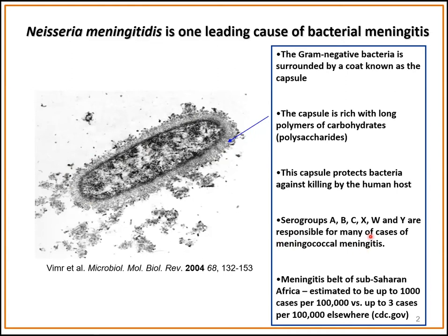There are six disease-causing serogroups: A, B, C, X, W, and Y. These are responsible for many cases of meningococcal meningitis, and there is a particular region in sub-Saharan Africa known as the meningitis belt where there is an increased incidence of Neisseria meningitis-caused disease.